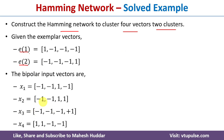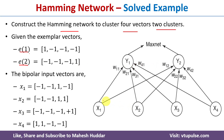Given these four input vectors, we want to cluster them into two clusters. This is how the Hamming network looks. Each input vector contains four components, so I have taken four input nodes. We want to group them into two clusters, so I have Y1 and Y2 as the two cluster nodes. Each input node is fully connected to the cluster nodes. The weight from X1 to Y1 is W11, from X1 to Y2 is W12, from X2 to Y1 is W21, W22, and so on.